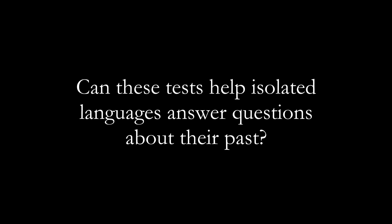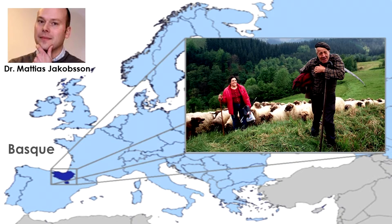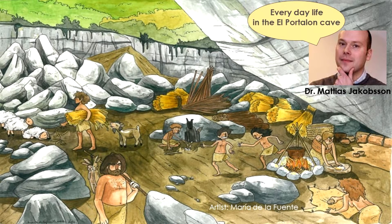Can these tests help isolated languages answer questions about their past? In the case of the European isolate Basque, it did. Many researchers have assumed that Basque must represent a relic language, spoken by the hunter-gatherers who occupied Western Europe before farmers moved in about 7,500 years ago. But a new study contradicts that idea and concludes that the Basques are descended from a group of those early farmers that kept to itself as later waves of migration swept through Europe. In the new study, led by population geneticist Matthias Jacobsen of Uppsala University in Sweden, researchers sequenced the genomes of eight ancient skeletons found in the heart of Basque Country, from El Portolon cave in northern Spain.